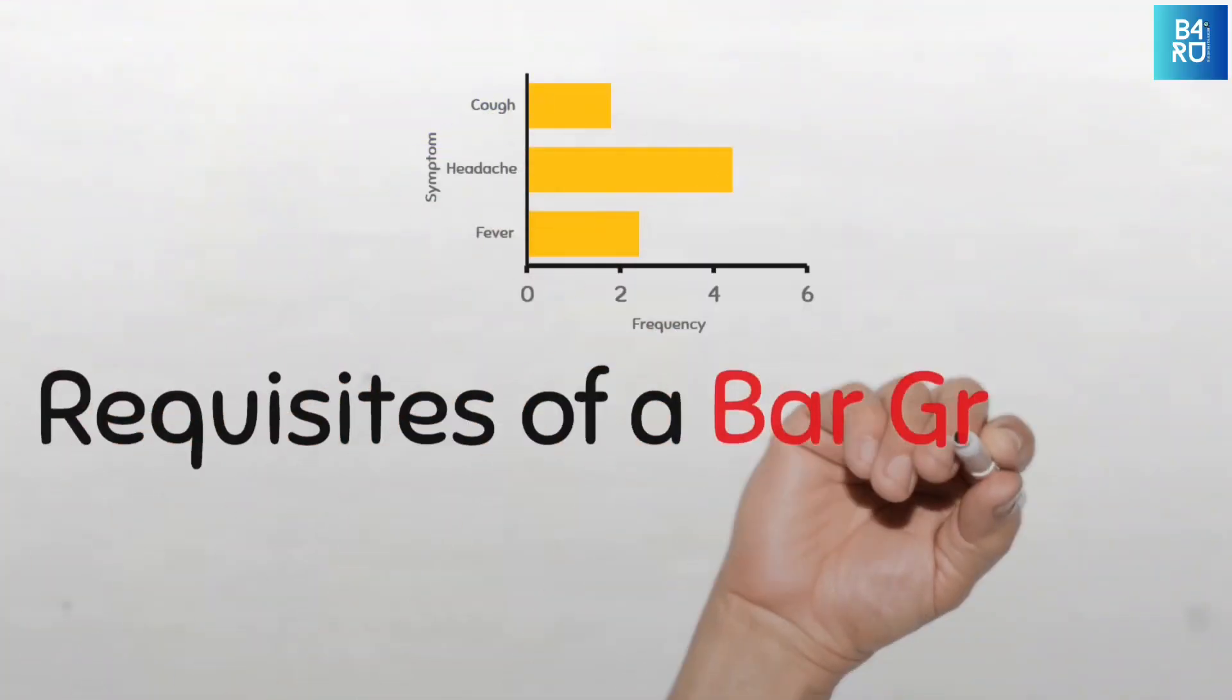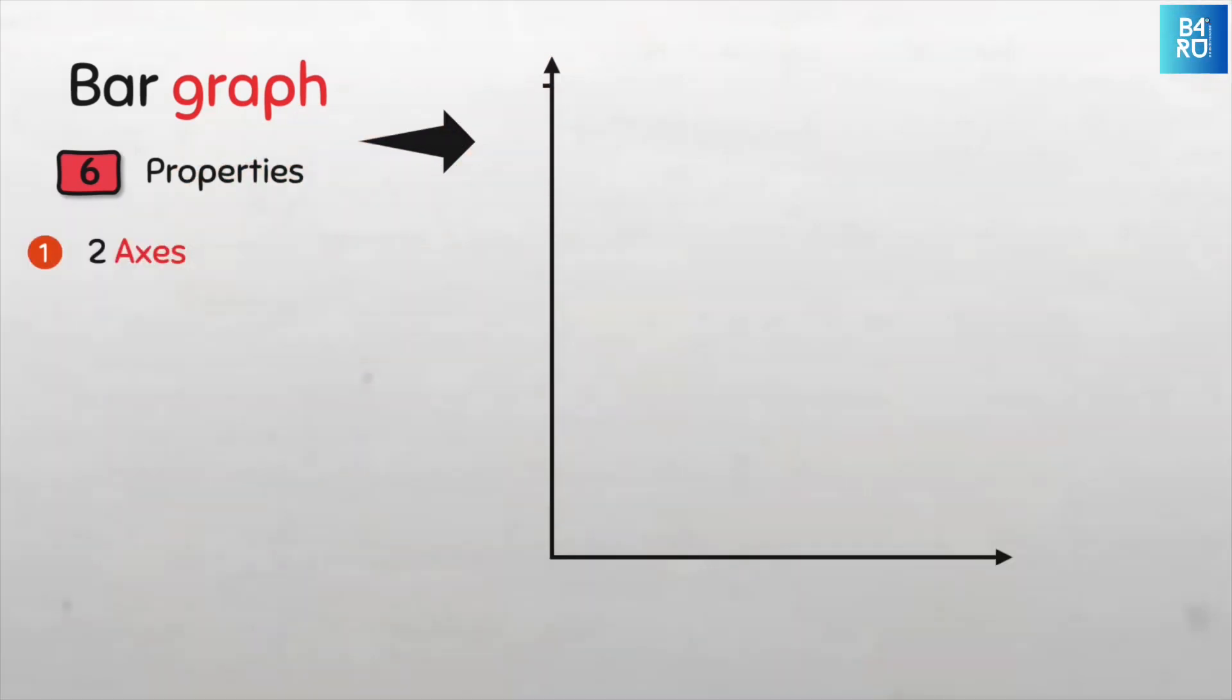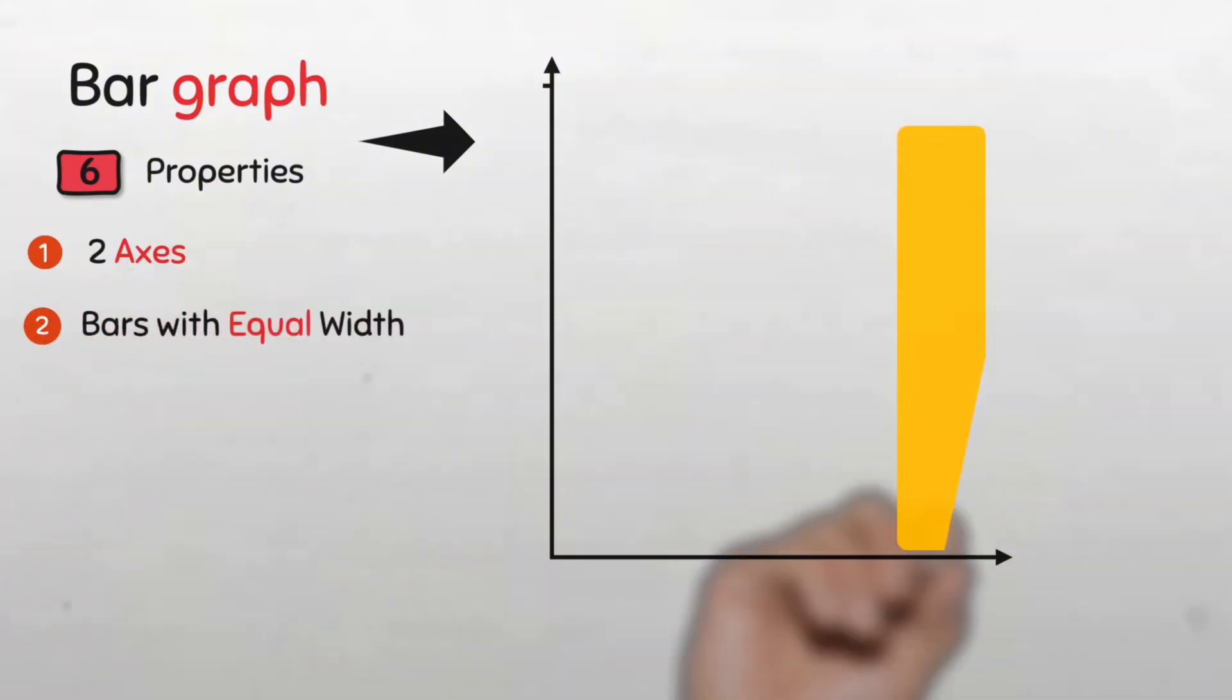So what are the requisites of a bar graph? For a diagram to qualify as a bar graph, it must have these six properties. First, it must have two axes: the vertical and horizontal axis, also called the y-axis and x-axis respectively. Number two: all bars should have equal width.